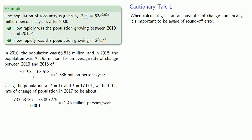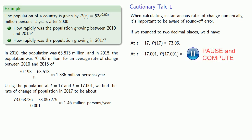To see why this might be a problem, let's see what happens if we rounded our numbers to two decimal places. At t = 17, P(17) is approximately 73.06. At t = 17.001, P(17.001) is also approximately 73.06. So our instantaneous rate of change would work out to be zero.